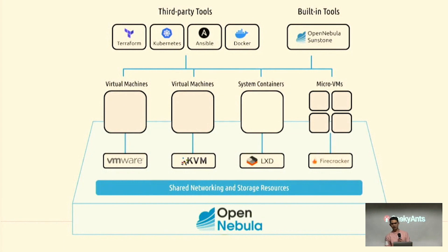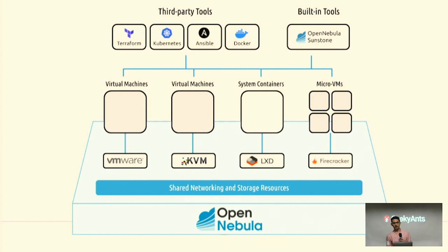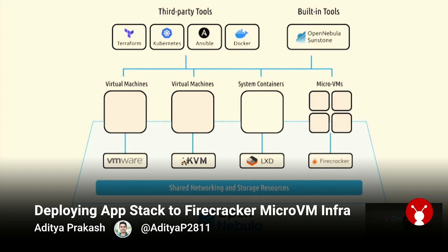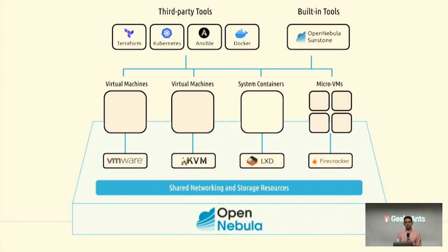The Open Nebula structure provides shared networking and storage resources for all booted VMs. It has availability of all popular hypervisors — LXC, KVM, or Firecracker. If you don't want a manual process, it has its own providers through Terraform, Kubernetes, Ansible, and Docker. The entire booting process can be handled with the providers that Terraform and Ansible offer.